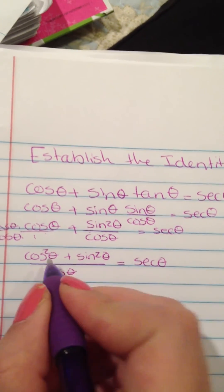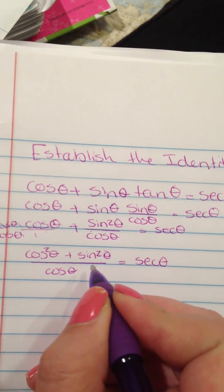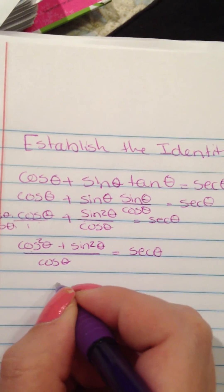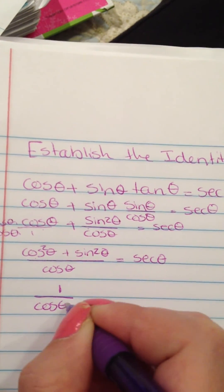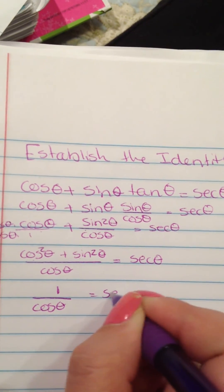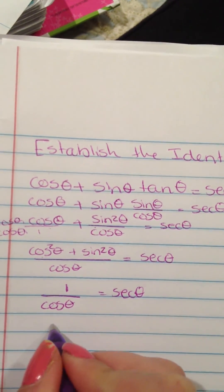Cosine squared plus sine squared by the Pythagorean theorem is equal to one. So one divided by cosine of theta equals secant of theta. One over cosine is the same as secant of theta.